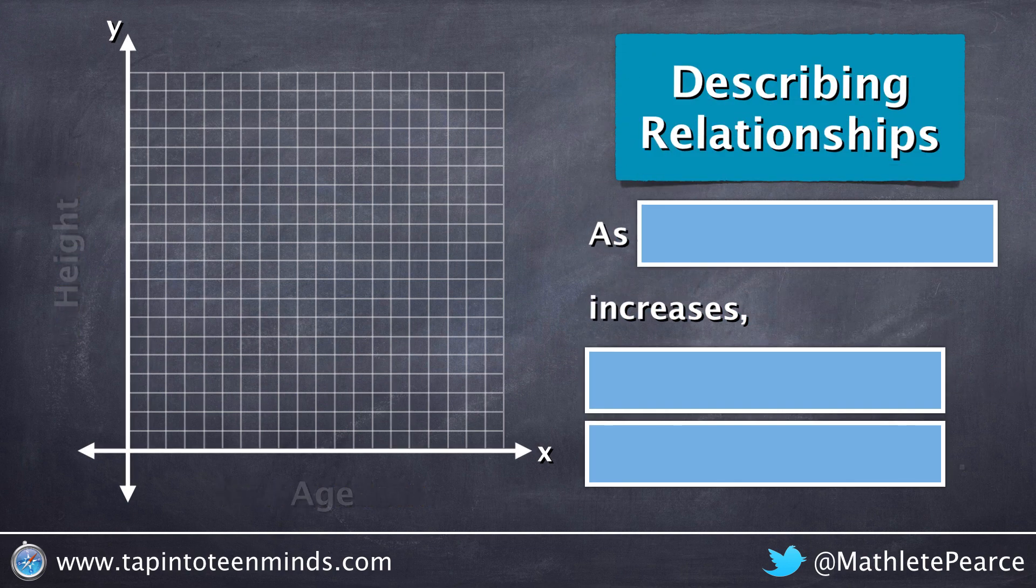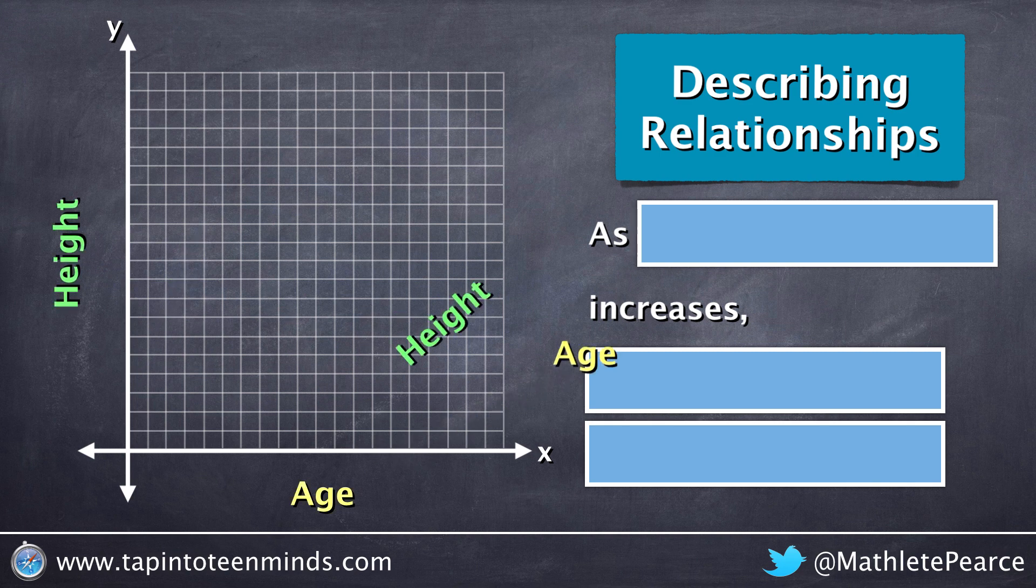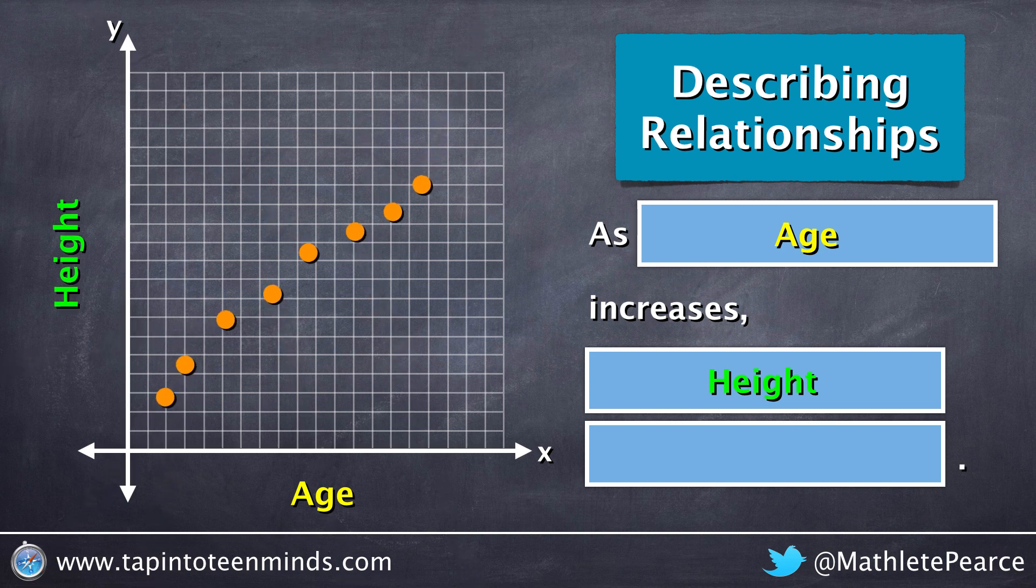Let's take a look at an example where the independent is age and the dependent is height. If we're talking about a child who's still growing, we would assume that as the age increases, the height of the child will also increase, as we can see in the scatter plot.